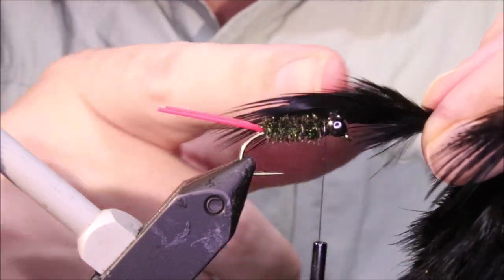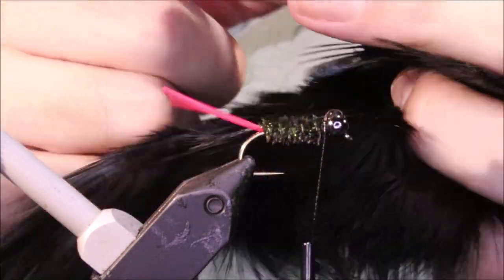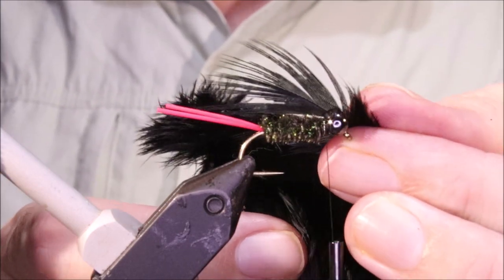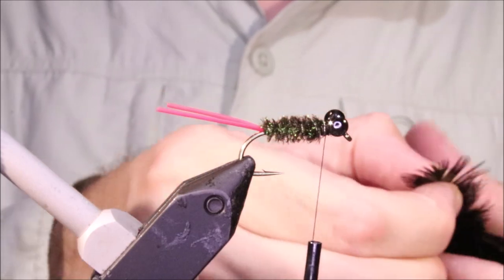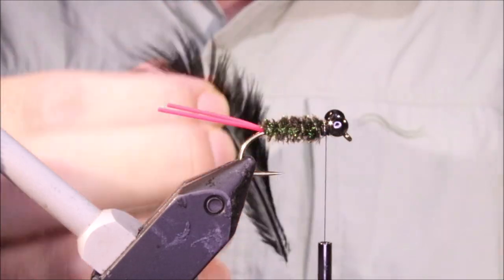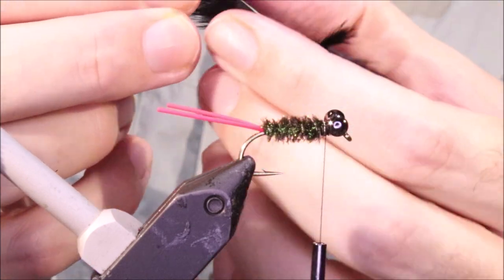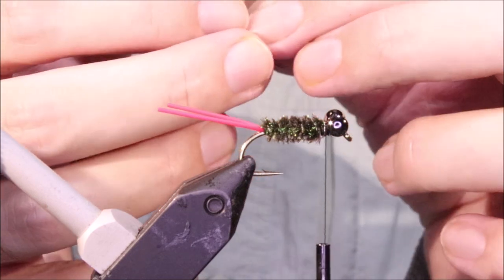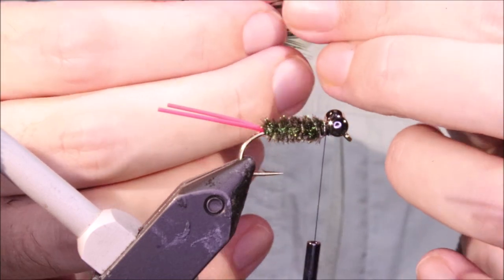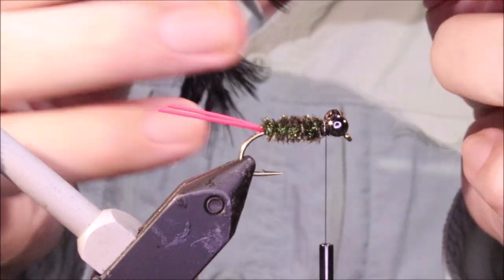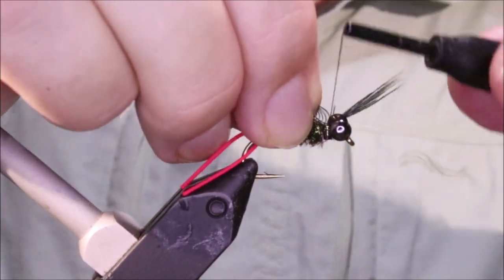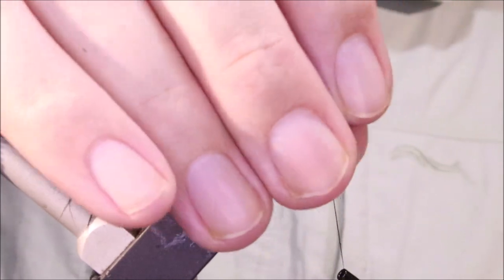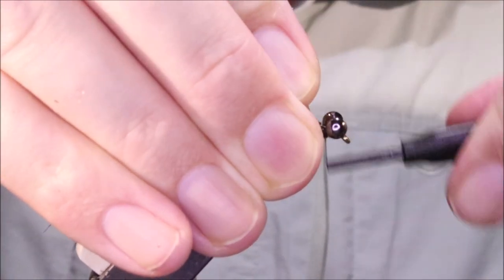So I'm looking for a feather with a barb length that will come out behind the hook, just beyond the hook bend. This one's no bad. Take away any of the fluffy fibres and it will expose the tip. I'm going to tie it in with the good side facing me. Three turns, fold that tip back, another three turns.